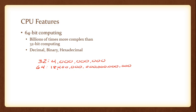CPUs handle information using different number notations: decimal, binary, and hexadecimal. Decimal is base 10, used in common math. Binary is base 2, representing on or off states. Hexadecimal is base 16, a way to represent large numbers using very few digits. We'll explore all three.